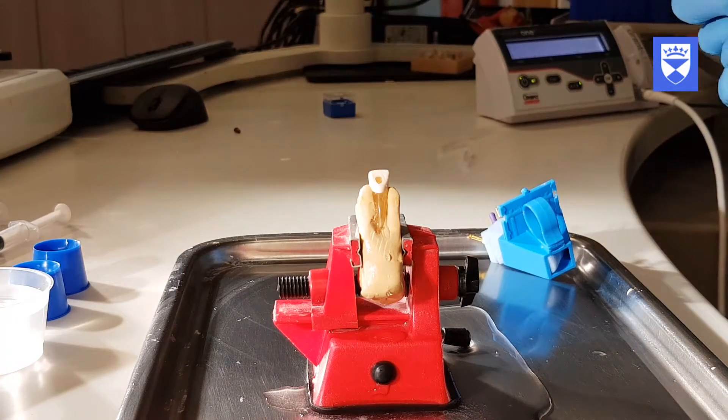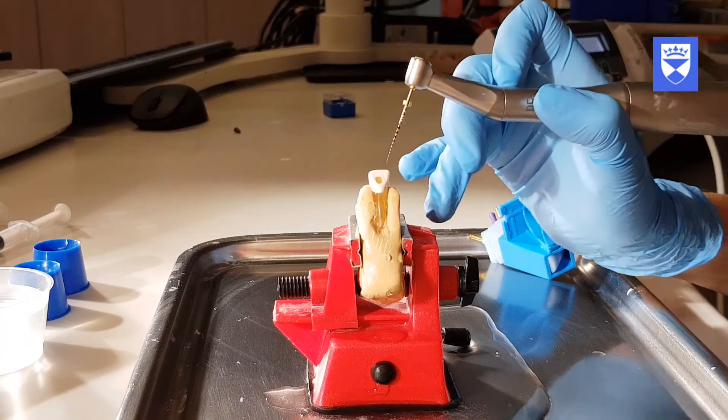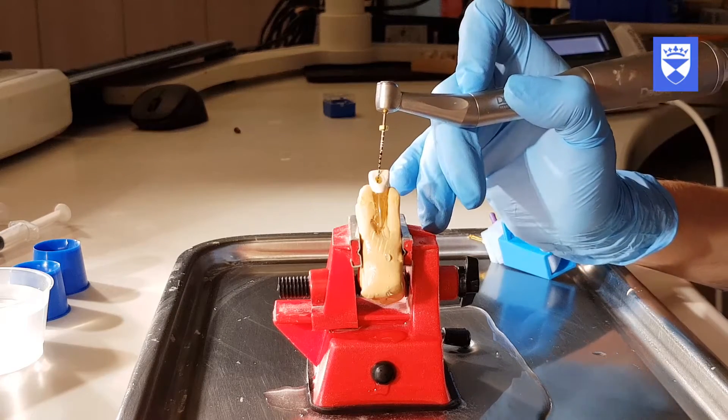Once the canal has been shaped, it is time to use the finishing files, which selectively cut the apical portion of the root canal.